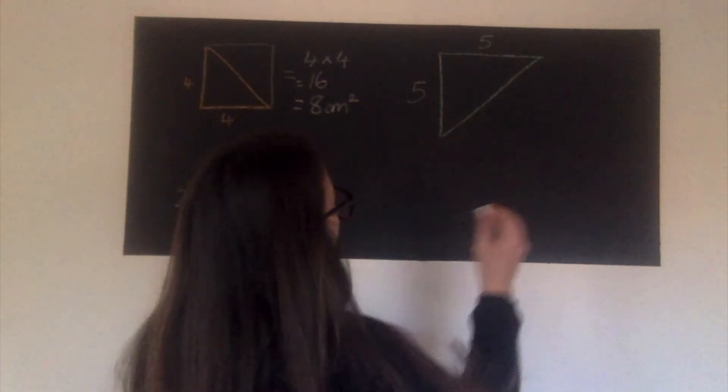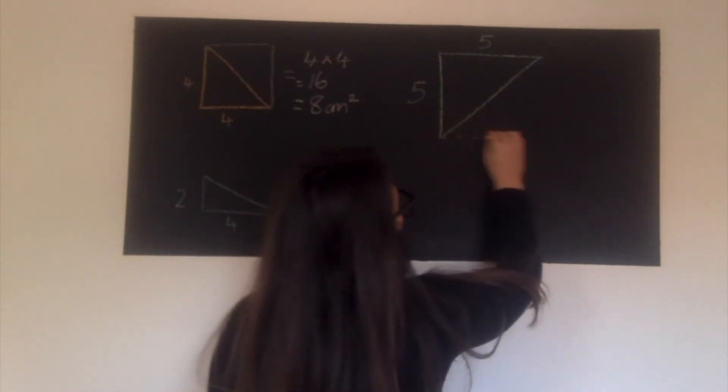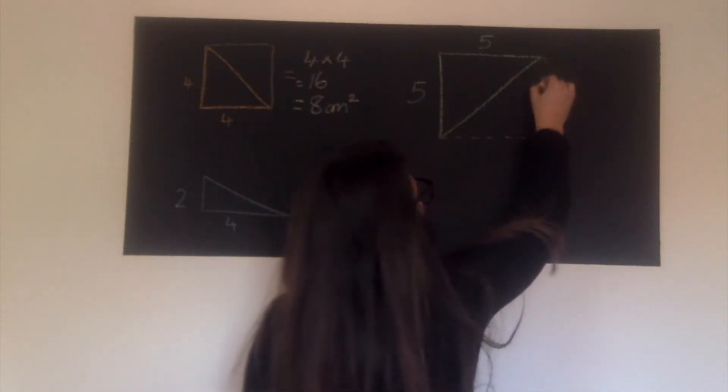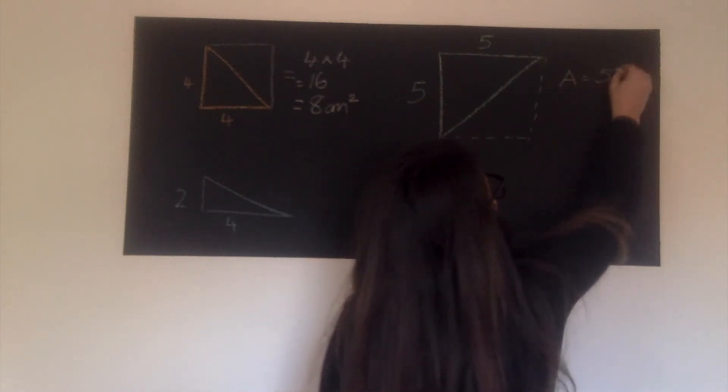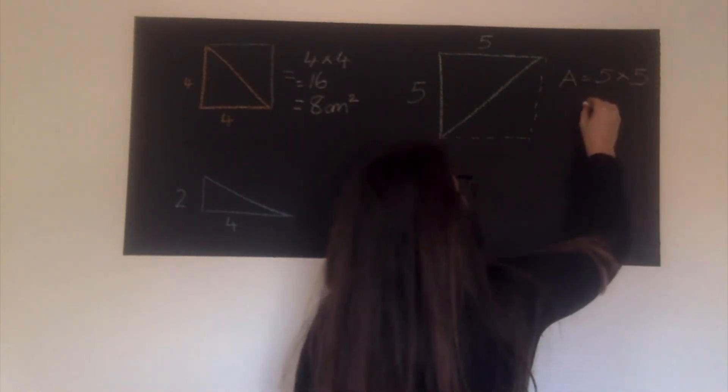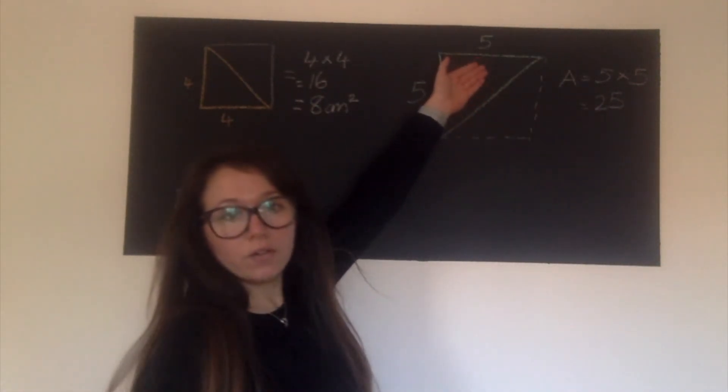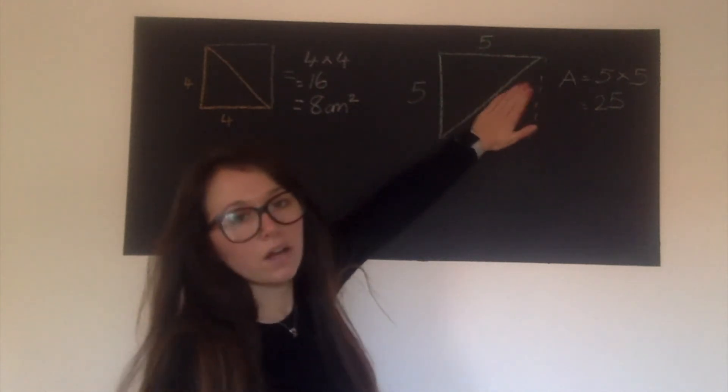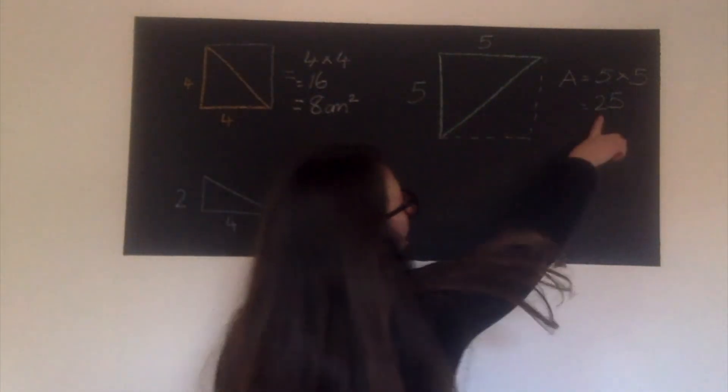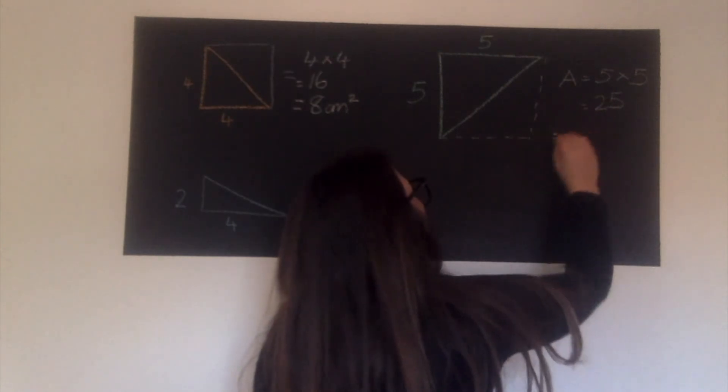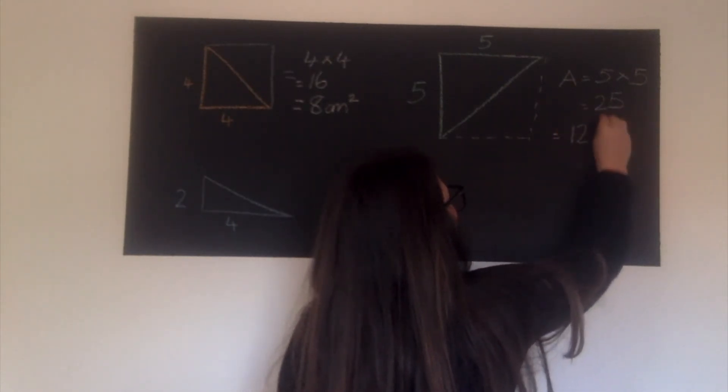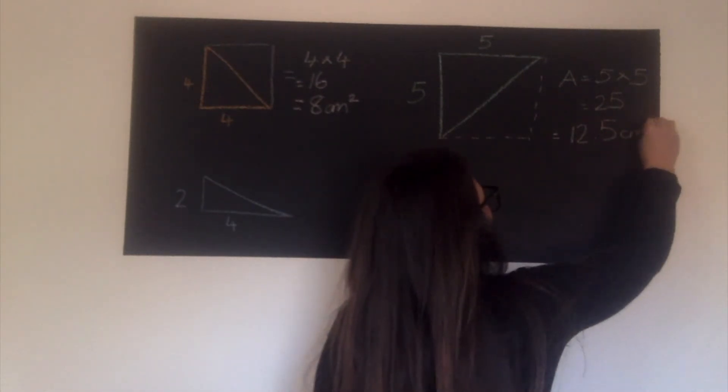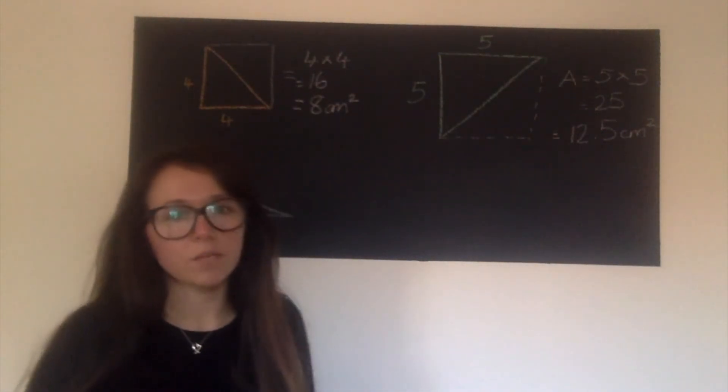Second one over here. Again, this is going to create a square for us because we've got equal sides. But in the area of the square, we would do five multiplied by five, length times width, which gives us 25 centimeters. Again, our triangle is half of the area of our square. So we need to do half of 25, which gives us 12.5 centimeters squared. Okay, so you have to go into a decimal for that one.